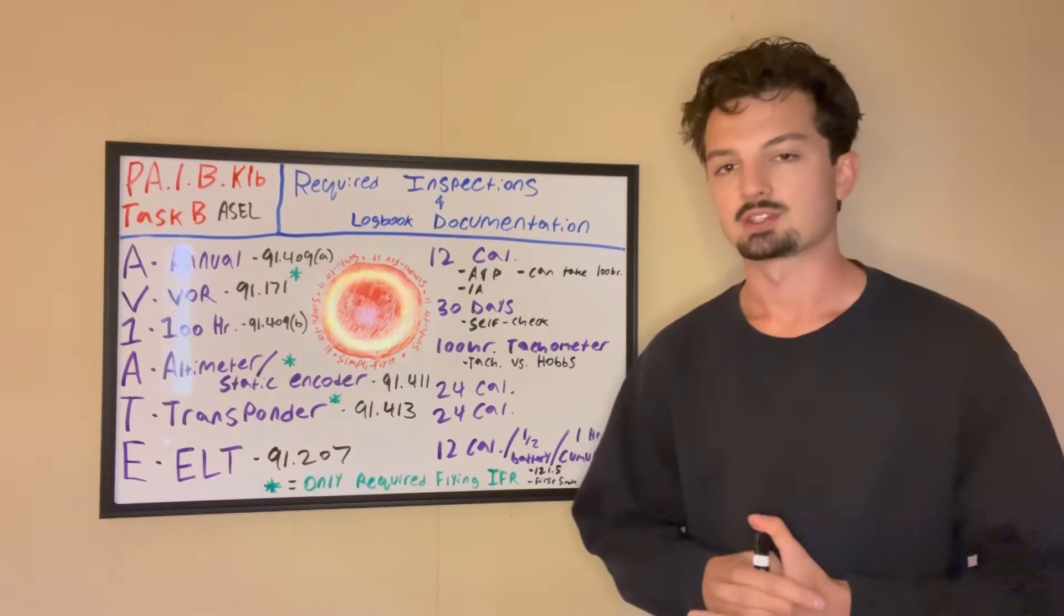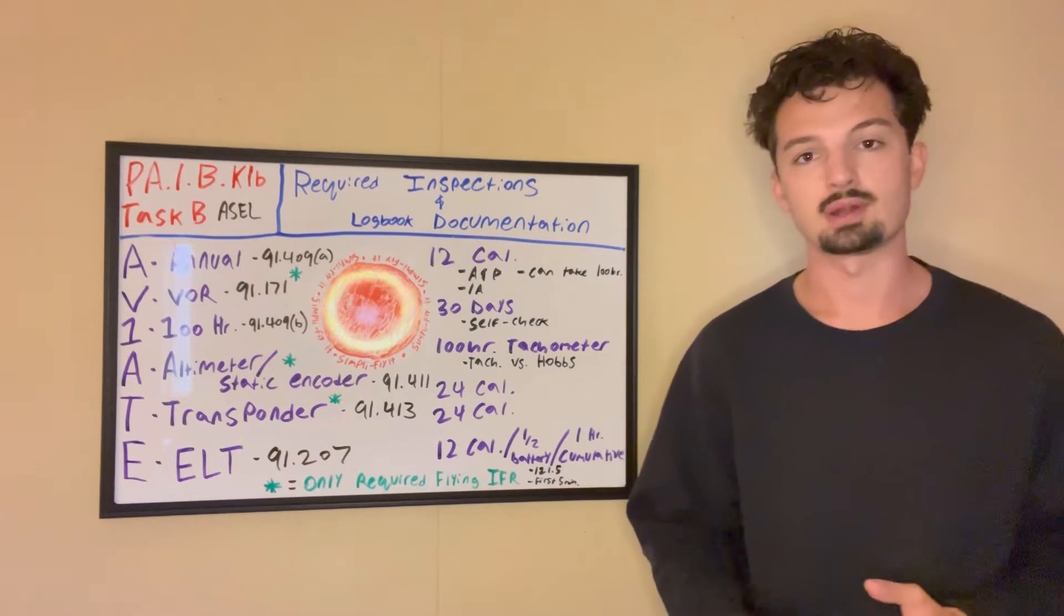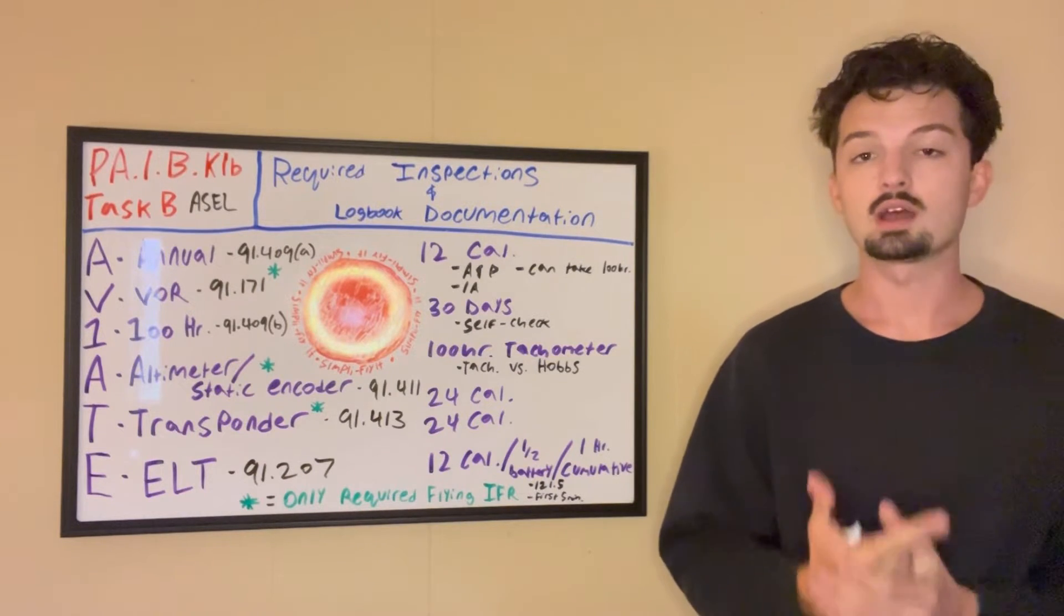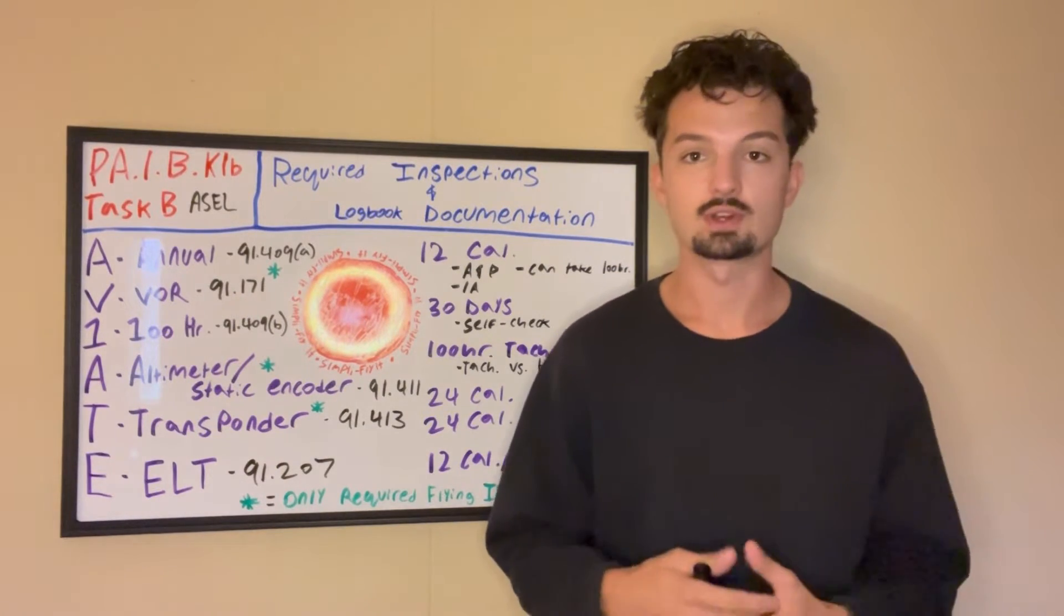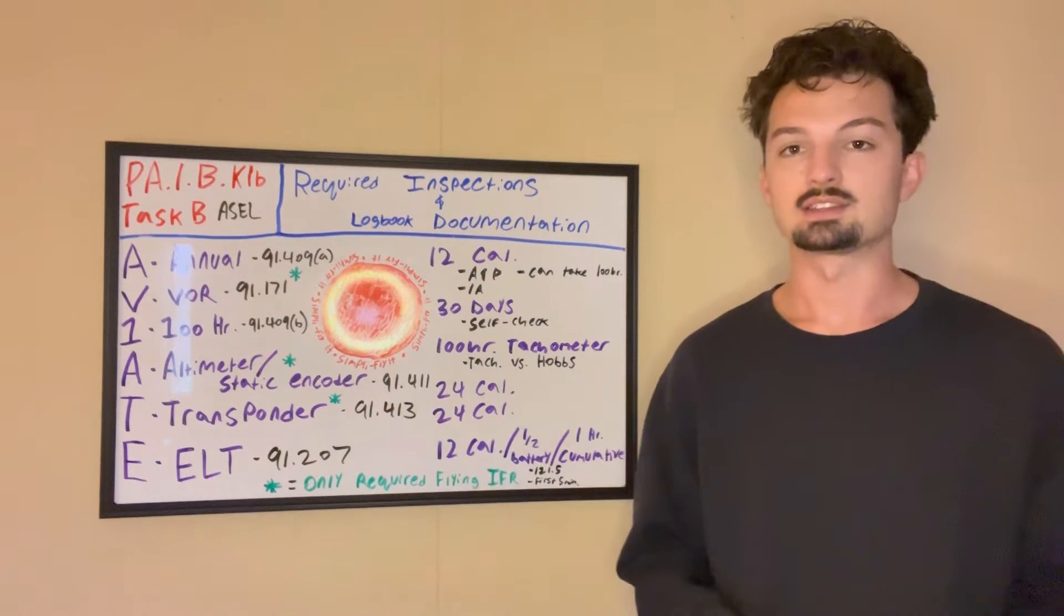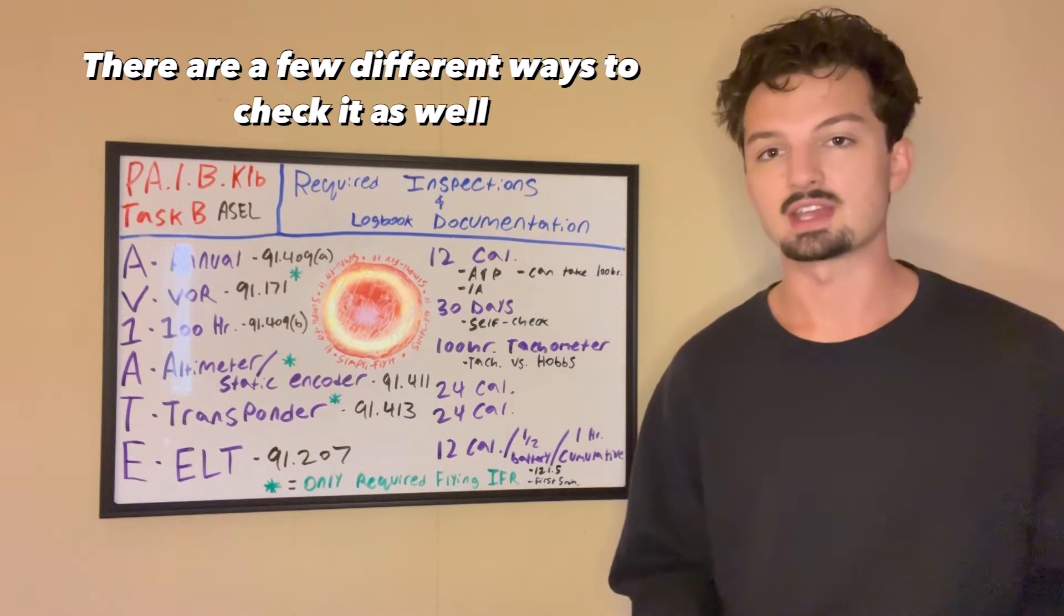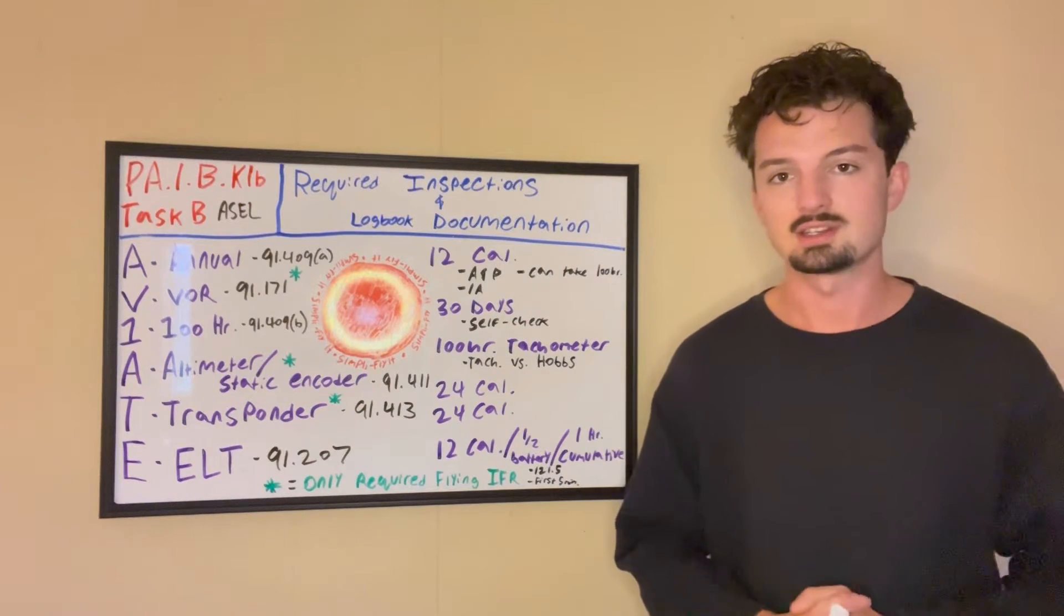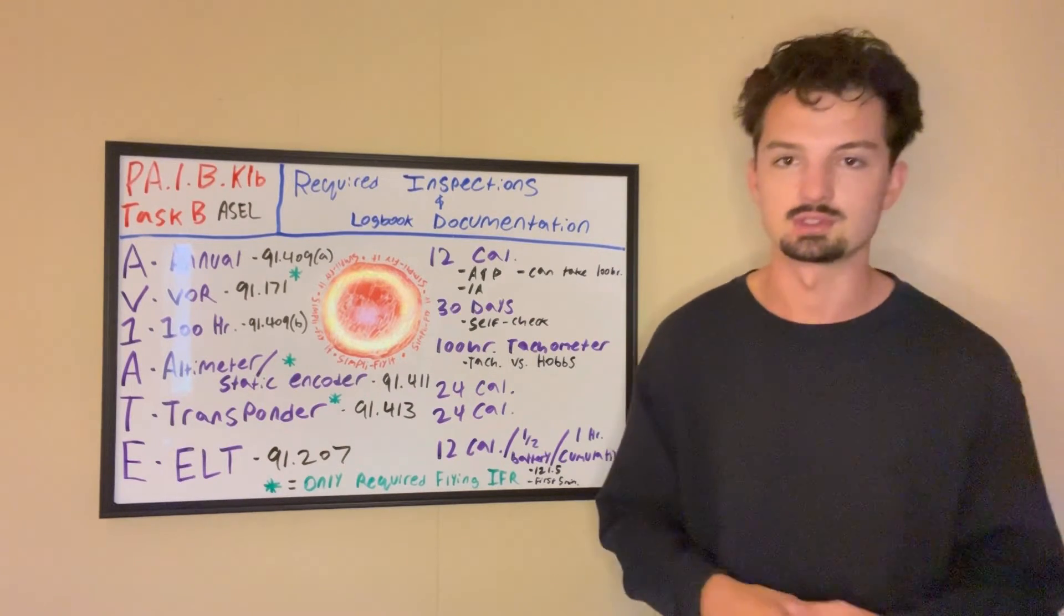Next is our VOR inspection. This is the one that students get wrong the most consistently, because usually I think the 30 days throws them off compared to the rest being 12 or 24 calendar months. The reason why the VOR inspection only needs to be inspected every 30 days is because you only need it if you're actually going to be on an instrument flight plan. You don't actually need to have your VOR inspected and working if you're going to be flying VFR. Another reason is because this isn't the type of inspection where you got to shut the plane down, pull it in the hangar, and it's going to be out for a couple days. The VOR inspection can be done in the air, it can be done on the ground, and it usually only takes a few minutes. And then you just have to document it in the logbook.